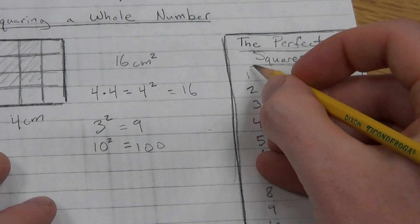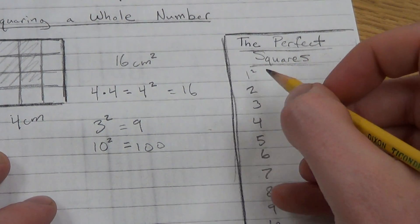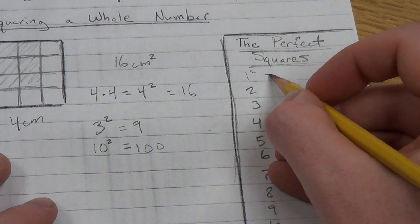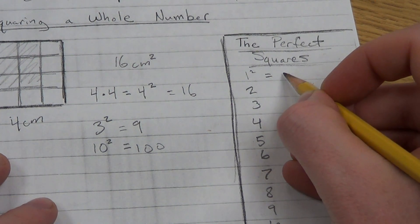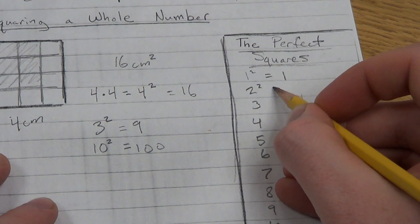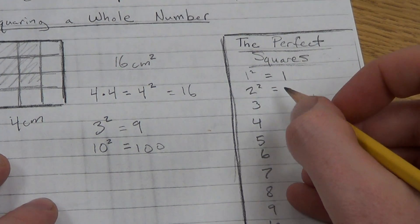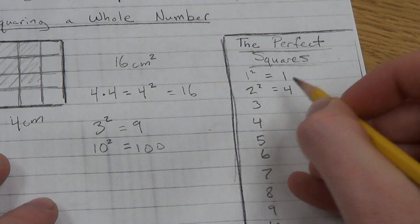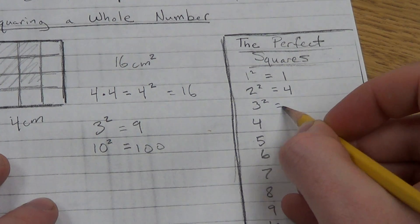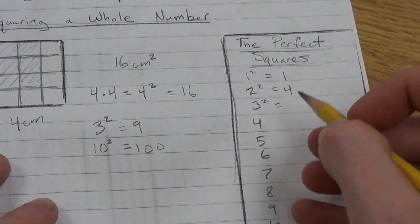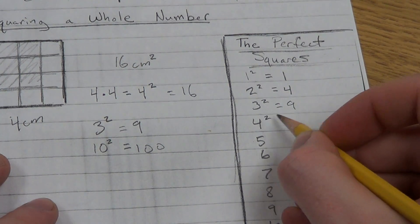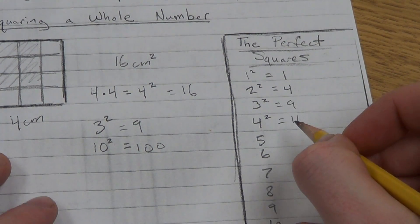So I'll square 1. 1 squared, which is 1 times 1, is 1. 2 squared, which is 2 times 2, is 4. 3 squared, which is 3 times 3, is 9. 4 squared, we already did, that's 16, that's 4 times 4.